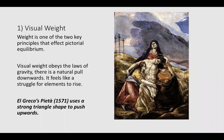To begin with, let's look at visual weight. Weight is one of the two key principles that affect pictorial equilibrium. Visual weight obeys the laws of gravity — there is a natural pull downwards and it feels like a struggle for elements to rise. To illustrate this, I've got El Greco's Pieta, which uses a strong triangle shape of the figures to push upwards. The key is to demonstrate that there is a feel of gravity — it is harder for an object to rise. The Virgin's head pushing up into the upper third of the painting looks like it is taking effort, while everything else feels irresistibly pulled downwards. The fact that her head is going upwards creates a real feeling of tension and effort.